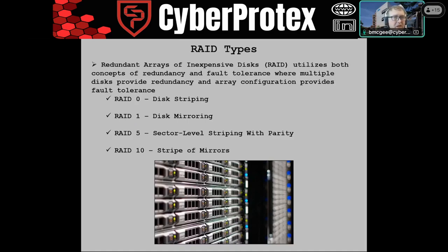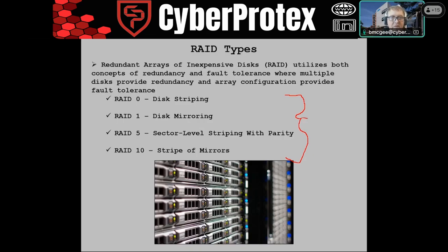What are the most popular ones we see on the exam? They're shown on the screen — different types of Redundant Array of Inexpensive Disks, RAID. I'm not talking about the bug killer — the roach killer, the can of spray. But ways that we can have redundancy and fault tolerance and hopefully back things up.